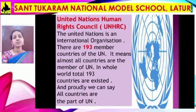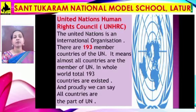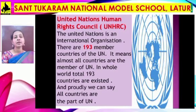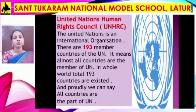The United Nations is an international organization. There are 193 member countries of the UN, which means almost all countries are members of the UN. In the whole world, a total of 193 countries exist, and proudly we can say all countries are part of the UN. Here you can see the symbol of the United Nations.